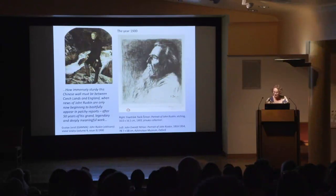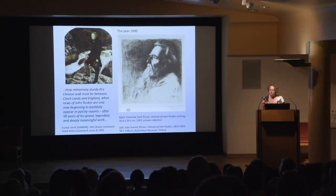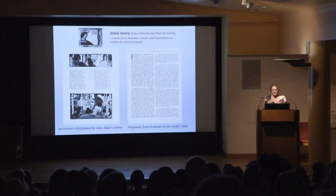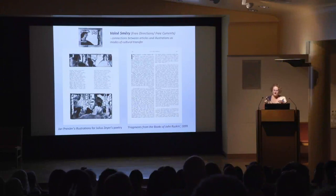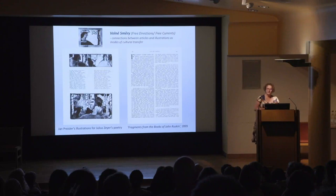I very much hope that I'm becoming one of these tools helping to dismantle this wall. Here what you see is an image of John Ruskin by the Czech artist František Tavík Šimon, from 1903. I'm showing a younger version of Ruskin by Millé, which is not the kind of Ruskin that the Czech people would open their eyes to, because they were really focusing on his much older incarnation as embodied by František Tavík Šimon.